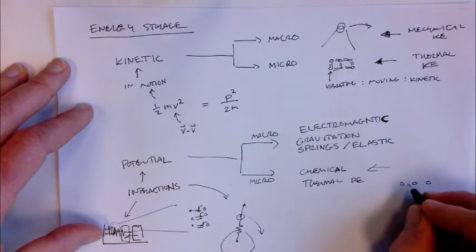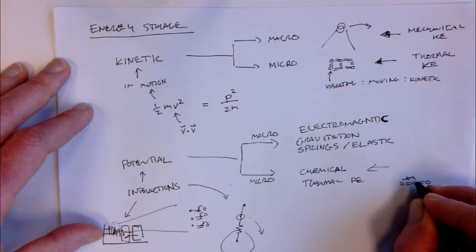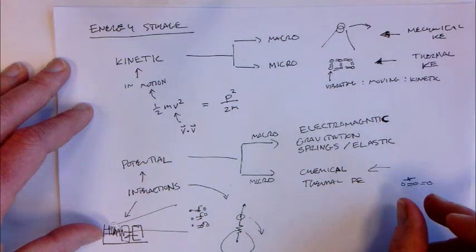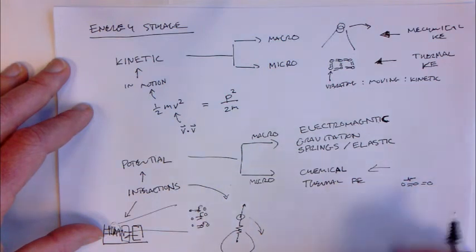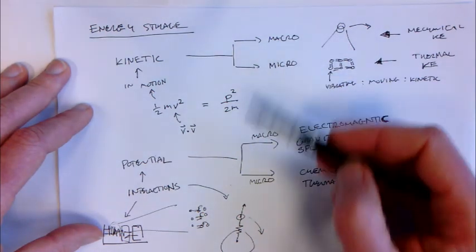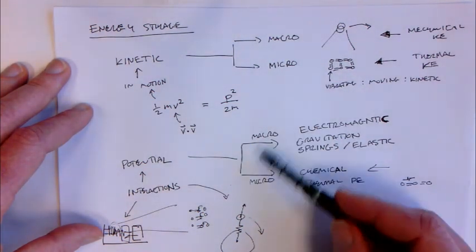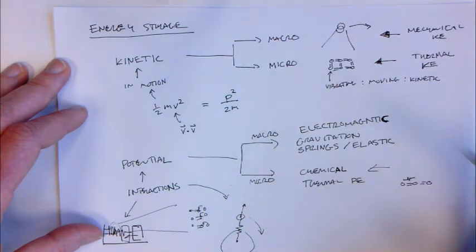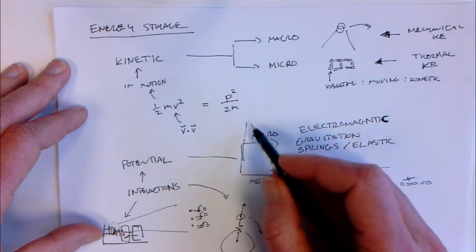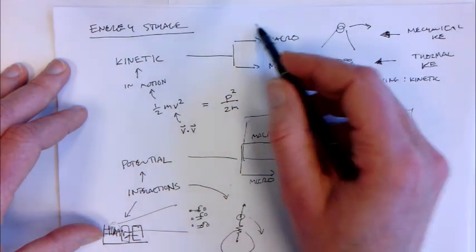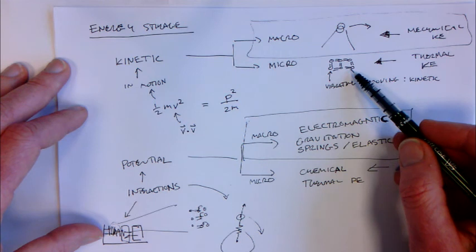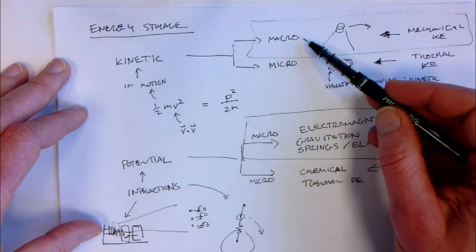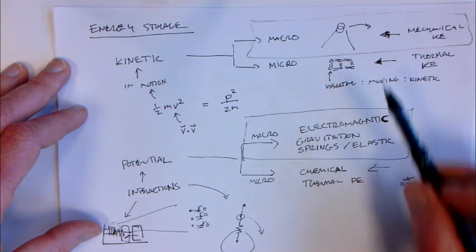So both with regard to motion and with regard to potential energy storage, you can think at a macroscopic level and at a microscopic level. Because this class is focusing on the big and slow, we'll be looking mainly at these macroscopic levels. But it's very much the case that you can also store energy at the microscopic level, and in fact you can convert energy from being stored at the macroscopic level to being stored at the microscopic level.